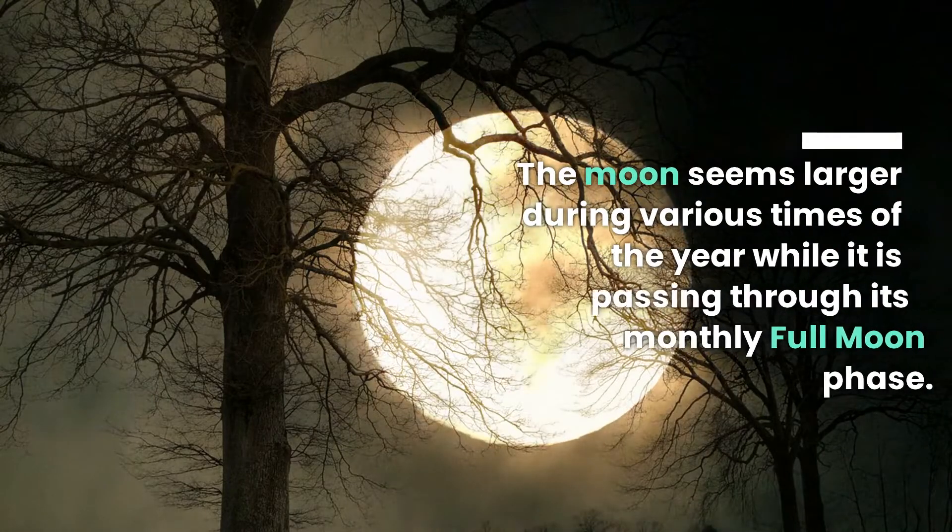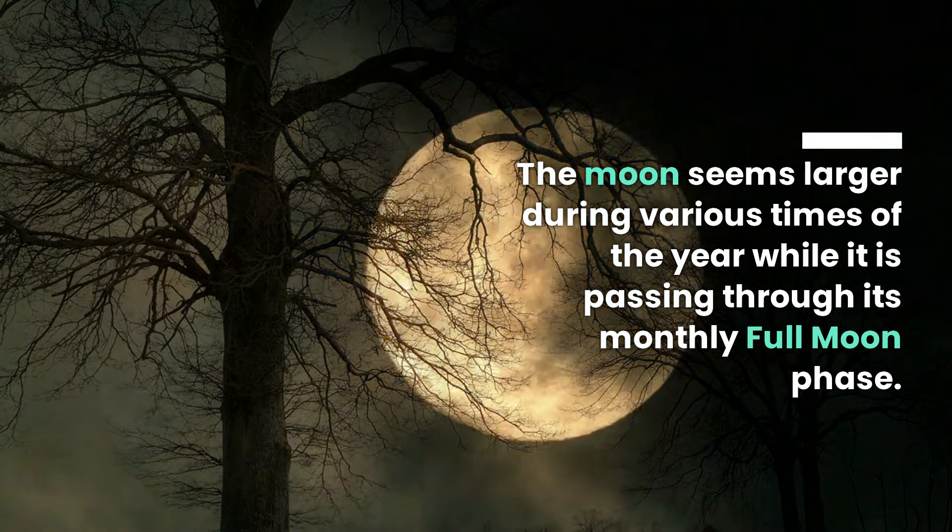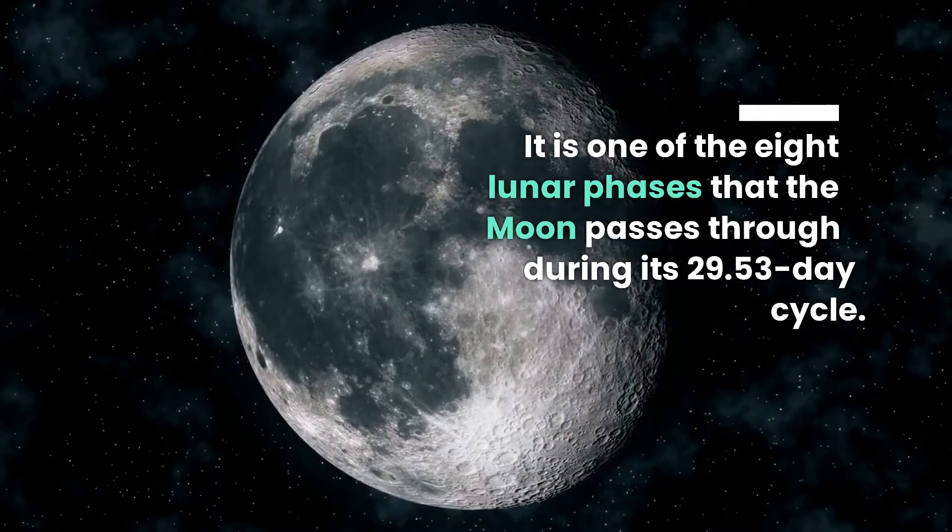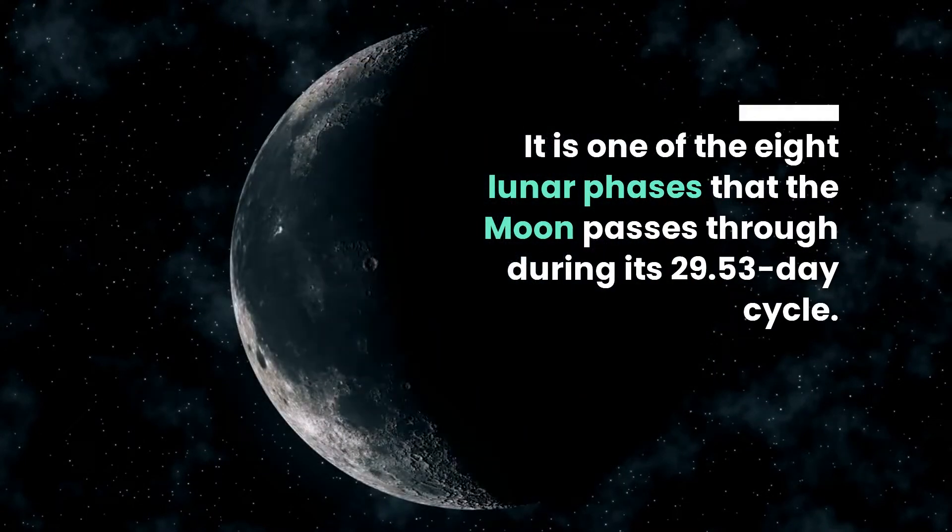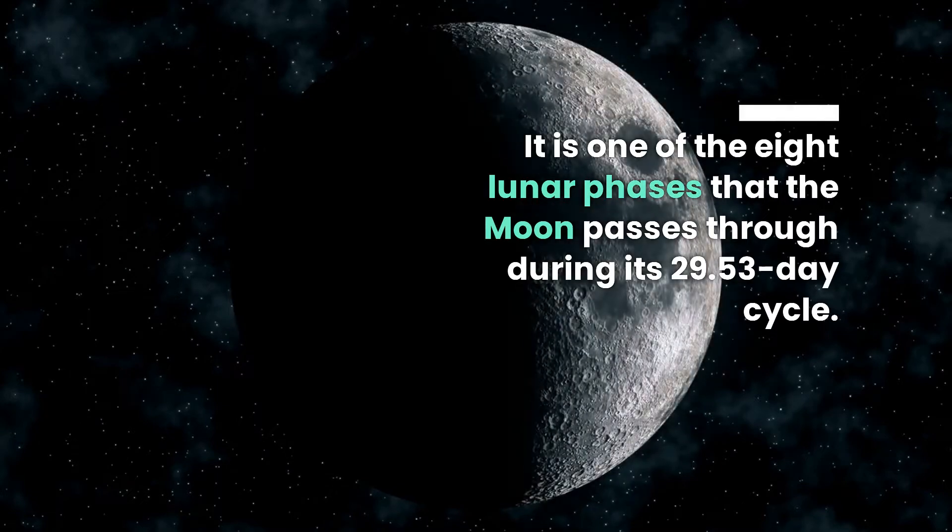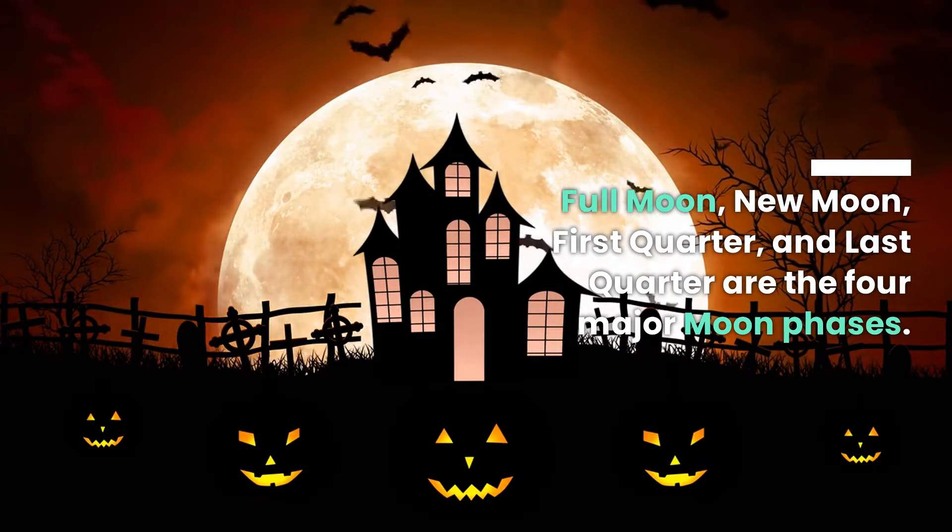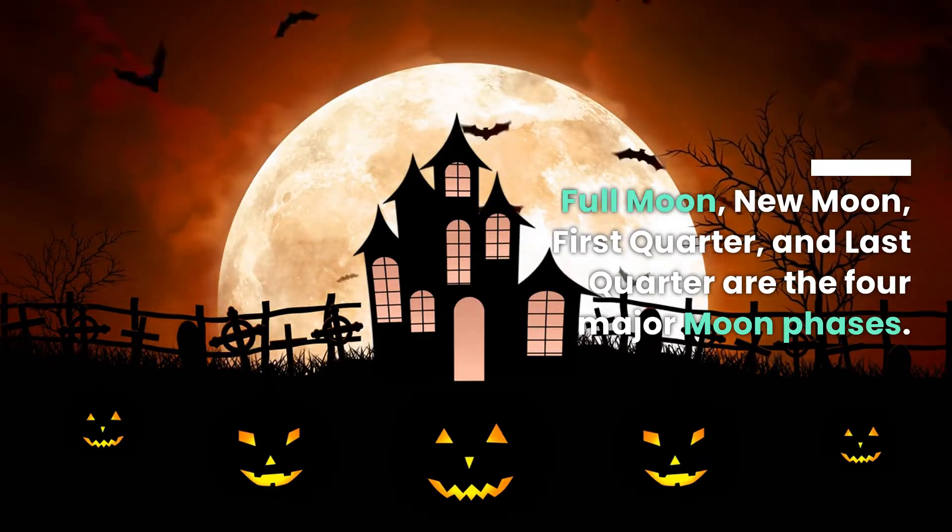The Moon seems larger during various times of the year while it is passing through its monthly full moon phase. It is one of the eight lunar phases that the Moon passes through during its 29.53 day cycle: Full Moon, New Moon, First Quarter, and Last Quarter are the four major moon phases.